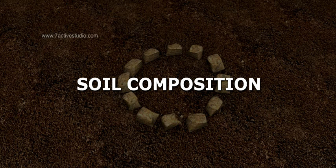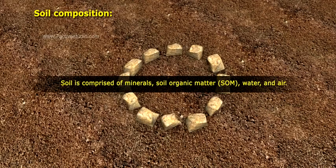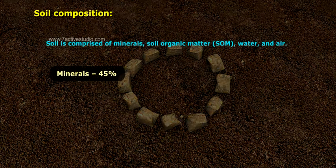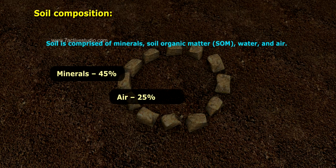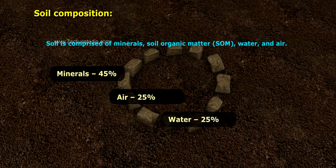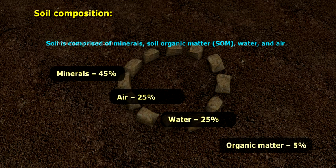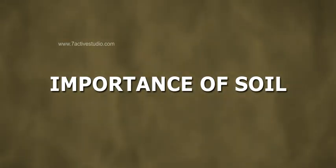Soil Composition: Soil is comprised of minerals, soil organic matter (S.O.M.), water and air. Minerals make up 45%, air 25%, water 25%, and organic matter 5%.